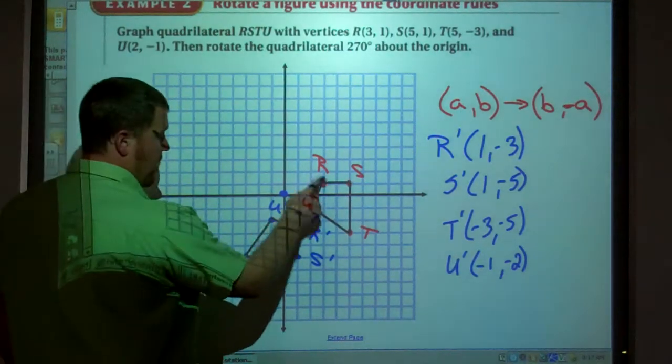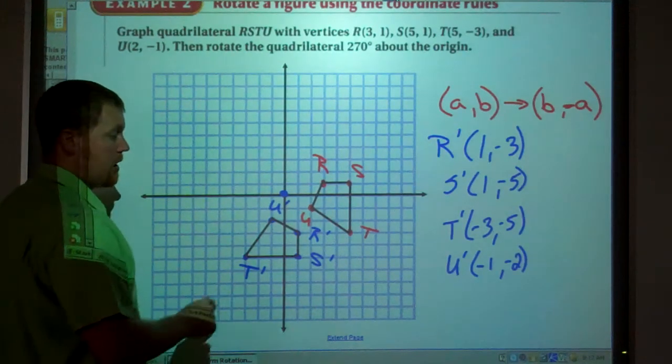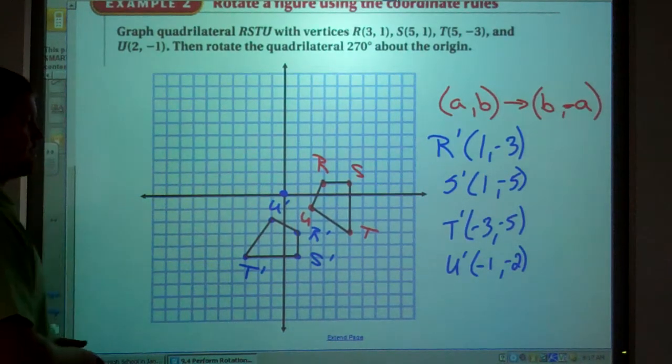And there's my quadrilateral rotated about the origin 270 degrees. Point R is going from there to there, 270 degrees.